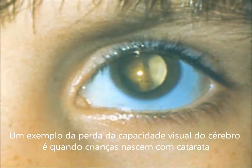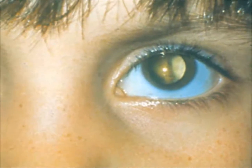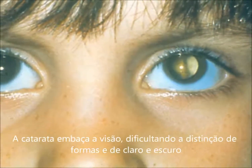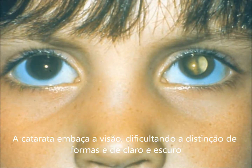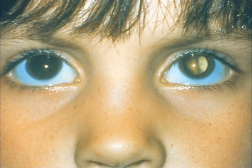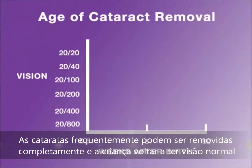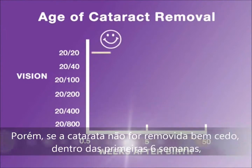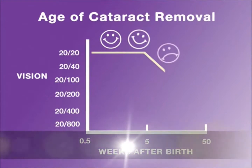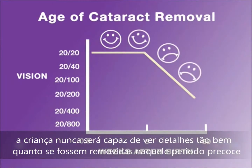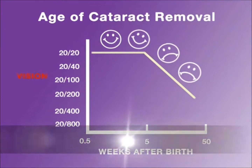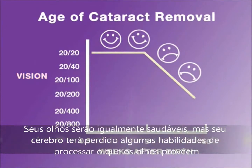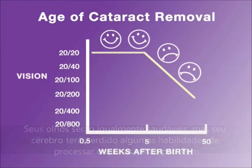One example of the brain's loss of visual capability occurs when kids are born with cataracts. Cataracts blur their vision and make it difficult to tell the difference between shades of light and dark. Cataracts can often be completely removed so the eyes are just as good as if the kids never had them. But if cataracts are not removed early — within the first six weeks — the kids will never see details as well. Their eyes may be just as good, but their brain has lost some of the ability to use what the eyes provide, and some parts of vision can never be recovered.